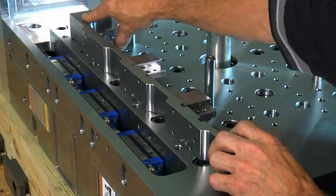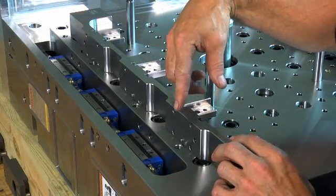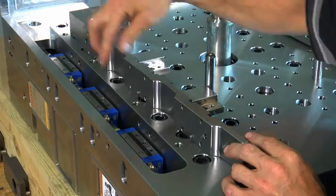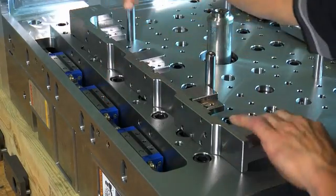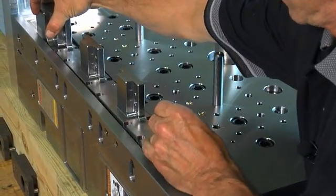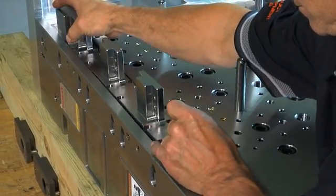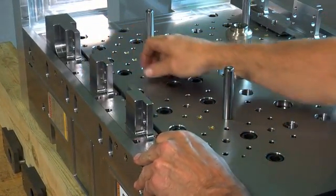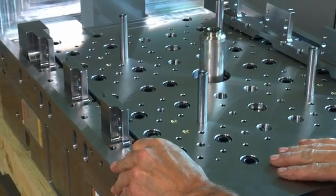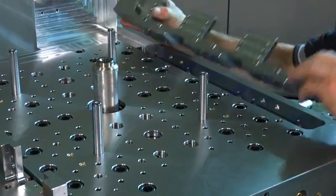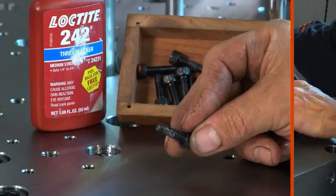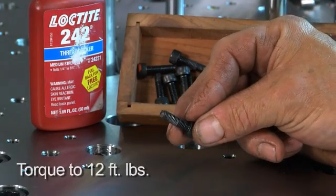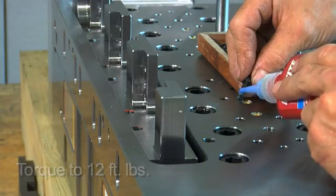Now we're going to insert the cam bars and the locating dowels, which are located here, here, and here. These two align onto the bearings, and the same on the opposite side. Now we're going to install the socket head cap screws with 242 Loctite and torque to 12 foot-pounds.